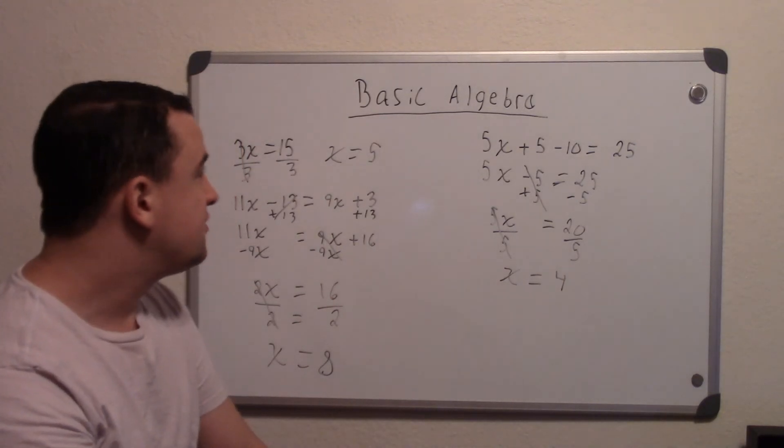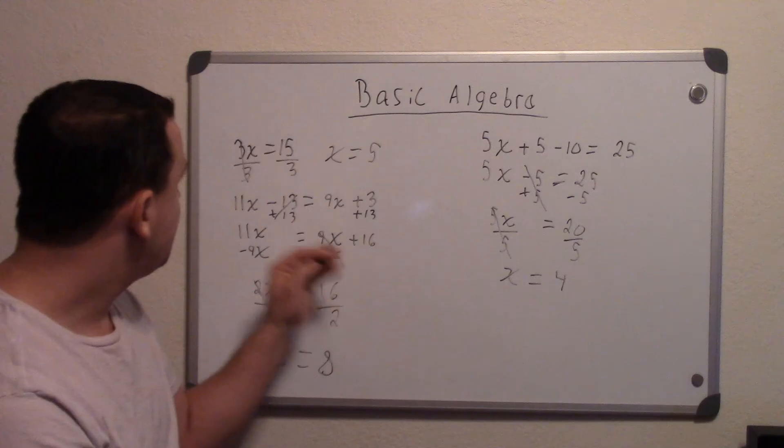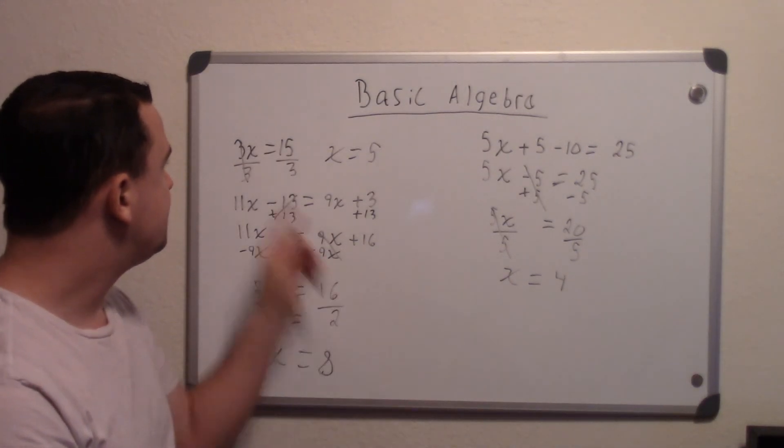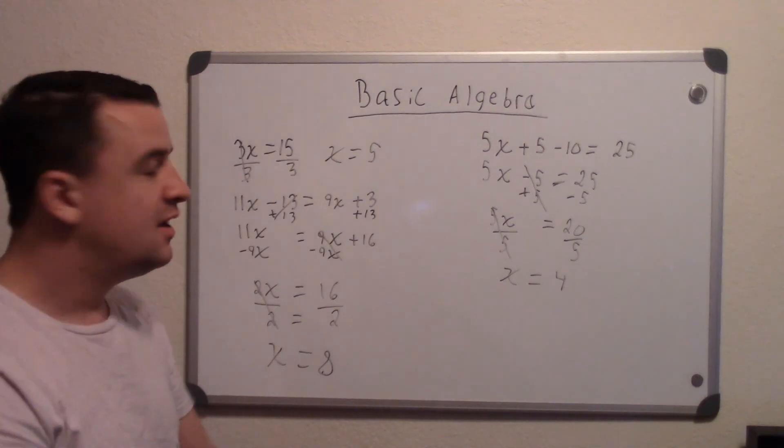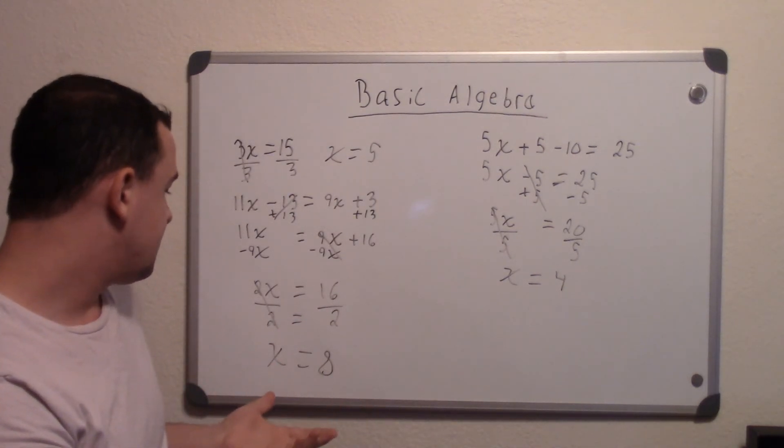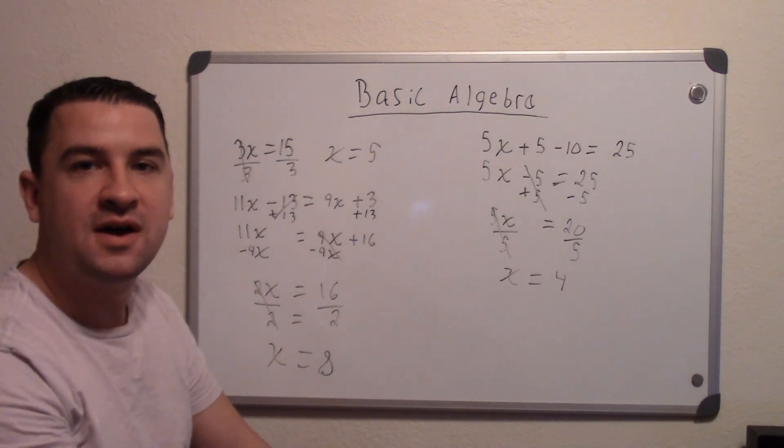So that's how you basically do basic algebra. Just whatever you do, you want to isolate the x's and the whole numbers. And to do that, you do the opposite that's being done. And make sure you do it to both sides. And you will get your equation. You will solve for x. Hope that helps. Thanks for watching. And please subscribe.